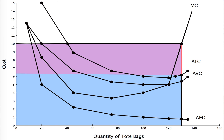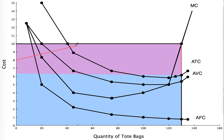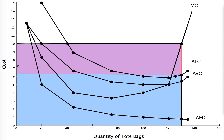At $10 we are making economic profit. The question is, where do we stop making economic profit — where are we just breaking even? At a price of $8, we are still making economic profit because we are above the average total cost curve. At $7 as well, we are still above the average total cost curve and so we're still making economic profit.